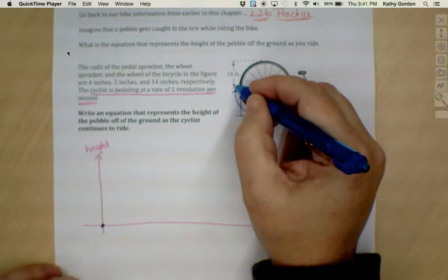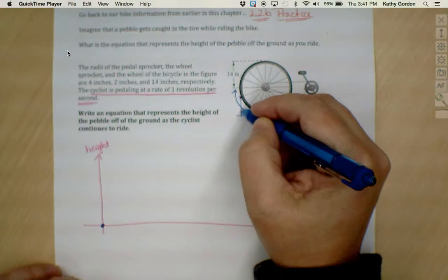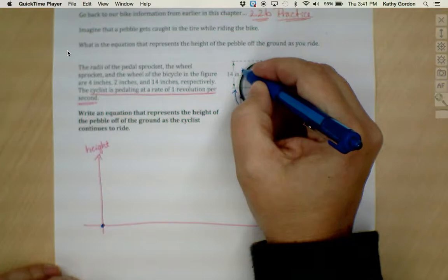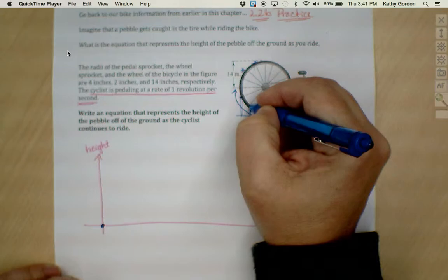Now, think about this. As my wheel rotates, what is happening to the height of the pebble? What is my distance from the ground? I think you can see here that as the wheel rotates, as the cyclist continues to ride, the pebble is going to increase in its height above the ground.